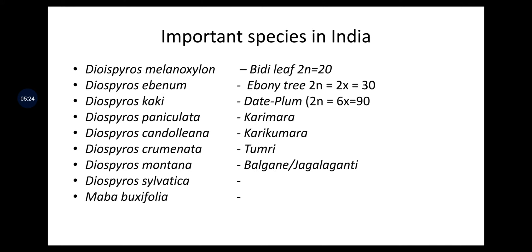Important species in India: Diospyros melanoxylon (bidi leaf), with 2n = 20. Diospyros ebenum (ebony), 2n = 2x = 30 chromosomes. Diospyros kaki (red plum/Japanese persimmon), 2n = 6x = 90. Diospyros paniculata is kakimara. Diospyros candolleana is karikumkuma. Diospyros chrominata is tumri. Diospyros montana is bulgam or jagadganti plant. Diospyros sylvatica and Maba buxifolia are other species.